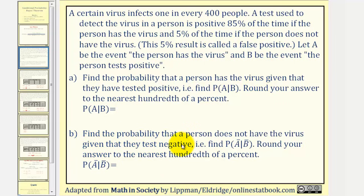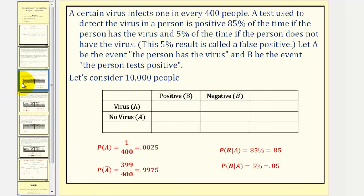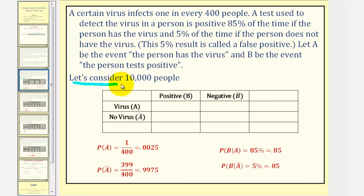We also want to find the probability that a person does not have the virus given that they tested negative, meaning the probability of not A given not B. Let's organize the information in a table. Looking at this first column, if A is the event they have the virus, then not A would be when they don't have the virus. And if B is when they test positive, not B would mean they test negative. To help us complete this table, let's look at an example where we consider 10,000 people as a sample.